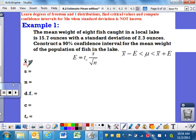What do I know? Do I know the mean of my sample? It is 15.7 ounces. Do I know the standard deviation? 2.3 ounces. That's taken from the eight fish that were caught. Do I know N? I just said it, it's eight fish total.